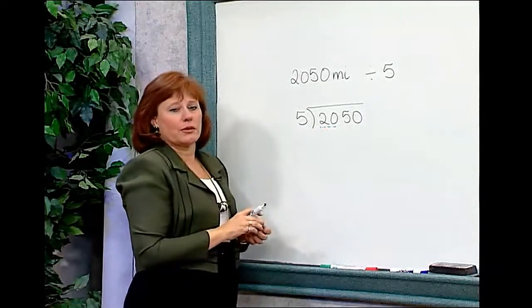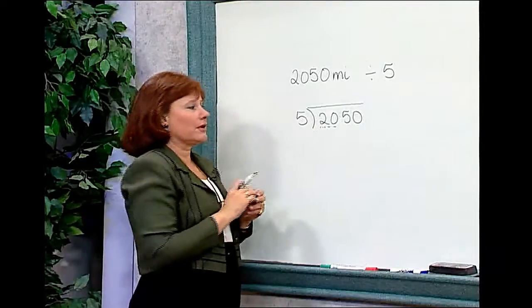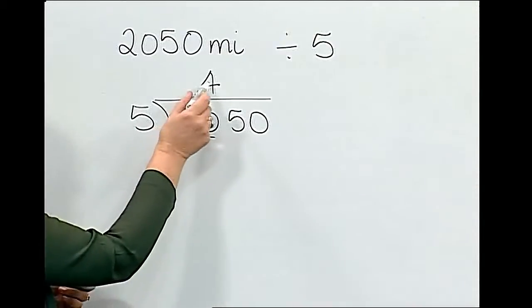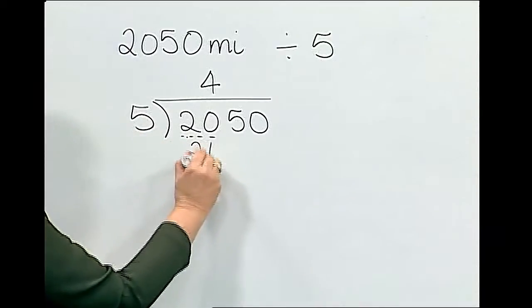Does five go into twenty? Yes, I want to think of a number that when I multiply it by five I'll come very close to twenty without going over. That number is four. The next step in the algorithm is to multiply four times five. Four times five is twenty.